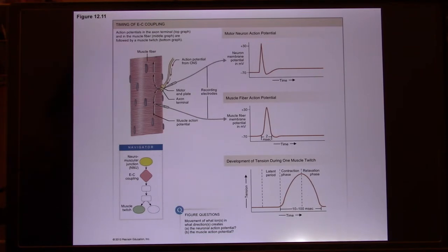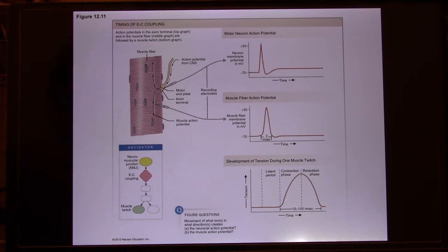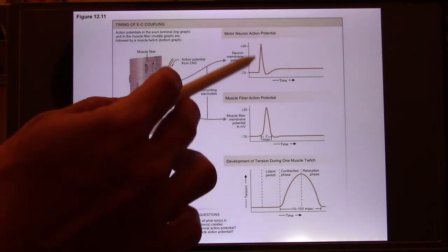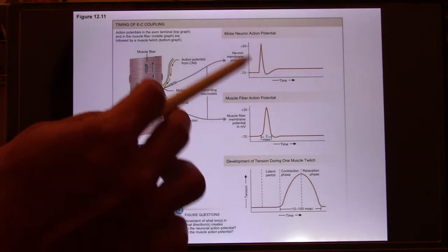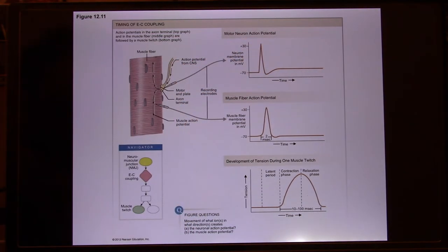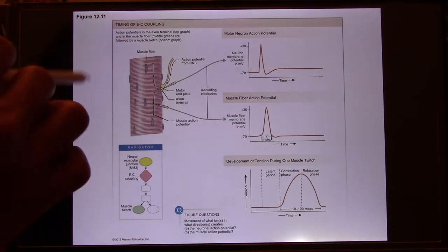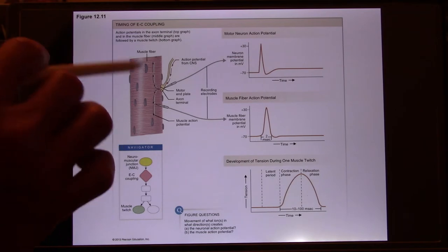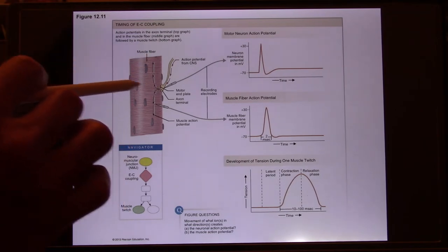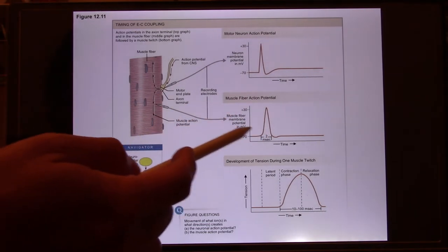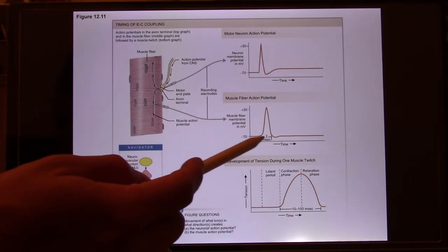Skeletal muscle is very powerful — it can produce big power so you can run and exercise. When we talk about the action potential in the neuron, it's very quick, about two to three milliseconds to finish one action potential. This action potential transfers to the muscle's action potential, which travels through the T-tubule of every muscle fiber. The muscle's action potential also takes about two milliseconds to finish.